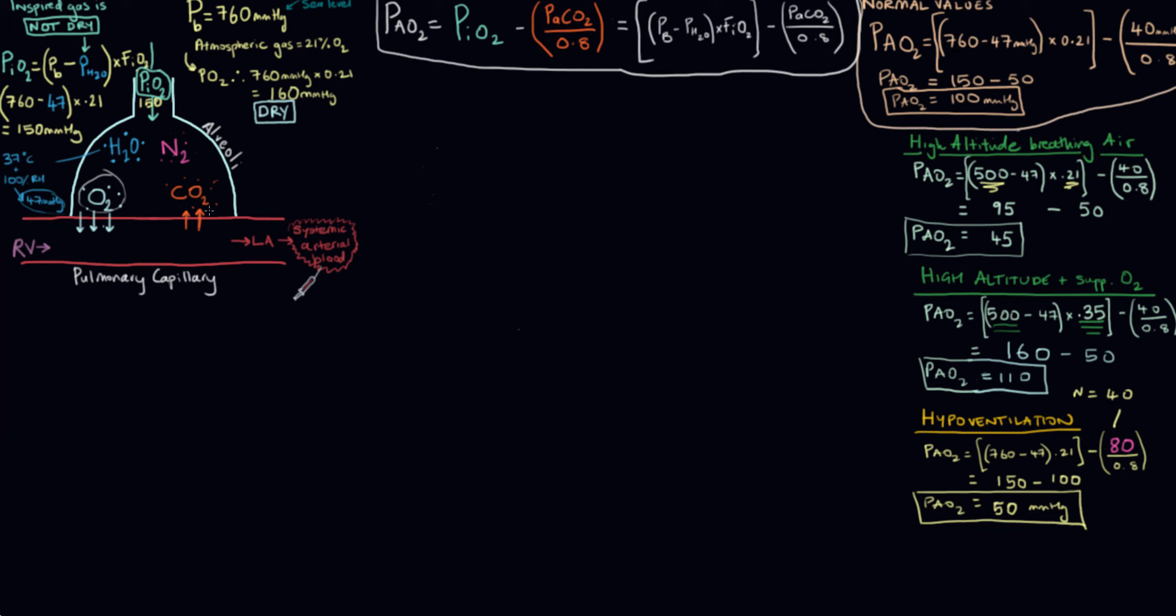So that should make sense from our diagram over here, right? We said that the reason our PO2, which was around 150, went down to 100 under normal conditions is because we started factoring in this CO2, which is now occupying this alveolar space. Once it diffuses out of the blood, those gas molecules start exerting a partial pressure. And the more of those there are, the more of a decrease in the O2 there's going to be. Because the more partial pressure exerted by carbon dioxide, the less that can be exerted by oxygen.